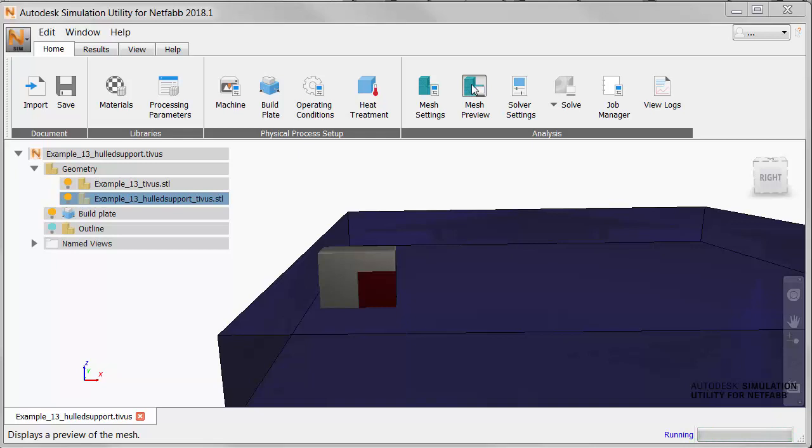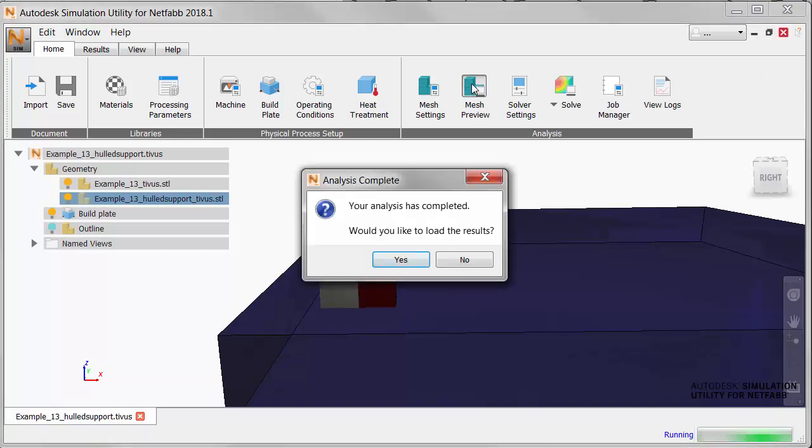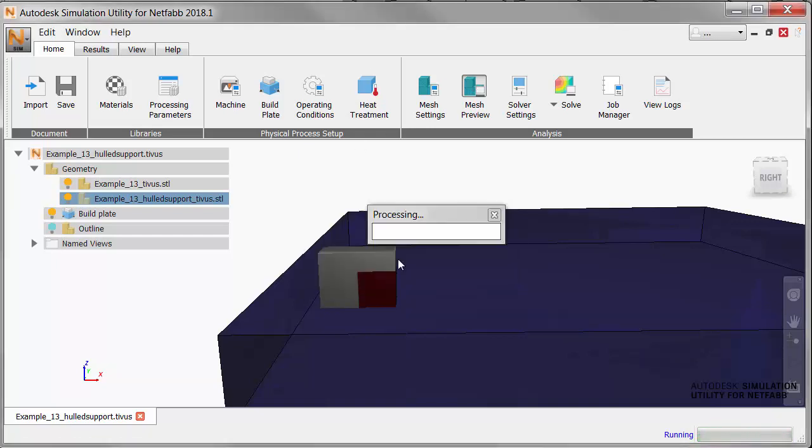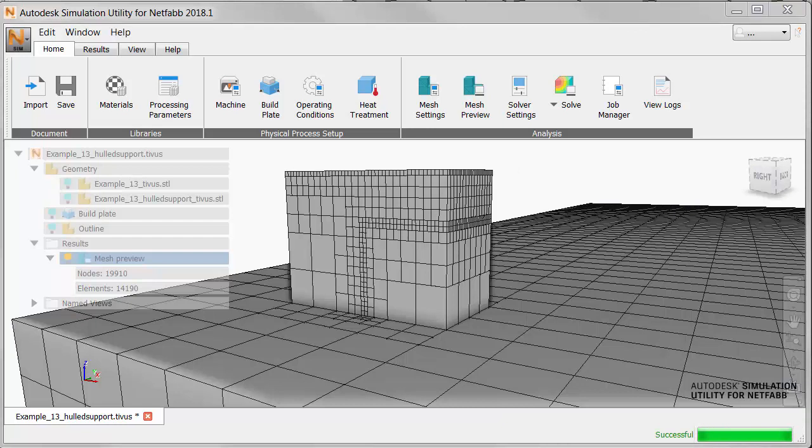Let's use the Mesh Preview feature to examine how the part and support are meshed. When we load and view the results, we see that the coarse mesh elements are used on the part and support near the build plate, where we don't expect to see anything interesting, but fine elements appear along the interface between the part and the support, where we will want to examine the results in more detail.